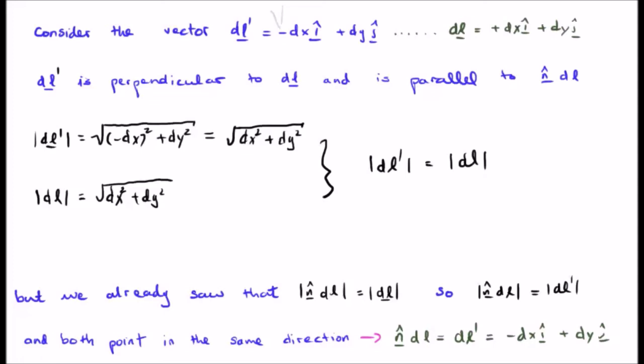We must therefore conclude that N hat DL is equal to DL prime is equal to minus DX i hat plus DY j hat.